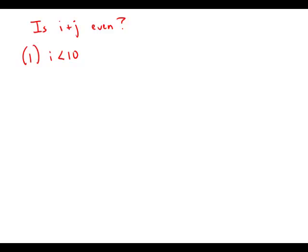It could be 0 or a negative number, but unfortunately this gives us no information about j. And if we have no information about j, we have no way of determining anything about what i plus j would be, whether it would be even or odd. So this statement by itself is insufficient.